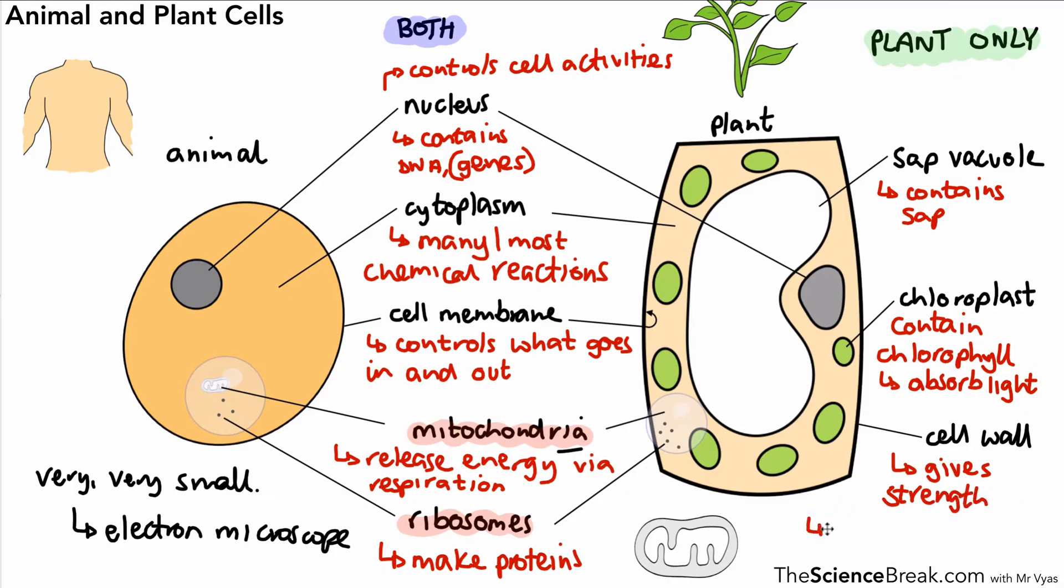Then we have the cell wall, and that gives rigidity and strength to the cell. It's made of a special substance called cellulose, and that's what gives it its strength. Cellulose is a very important keyword.